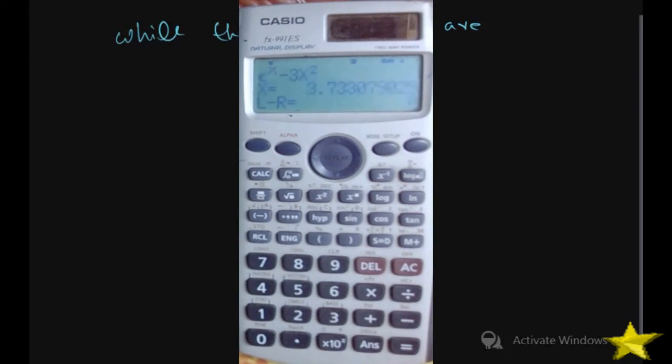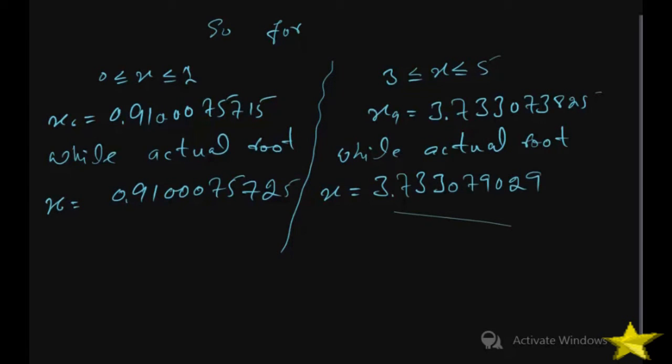And now see the difference between actual values and iterative values. Thanks for watching.